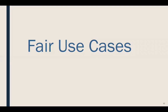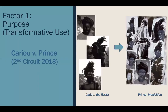We have four cases to talk about today. We're using them to illustrate particular factors, but we'll go through each factor that the court considered in each case. We'll start off with factor one — purpose, which deals with transformative use — and the first case we're going to talk about is Cariou v. Prince.